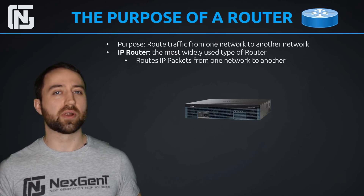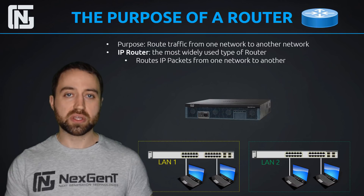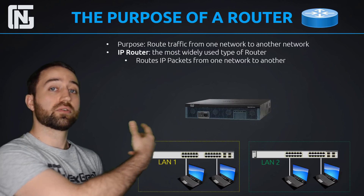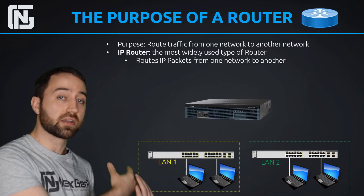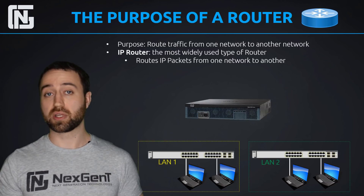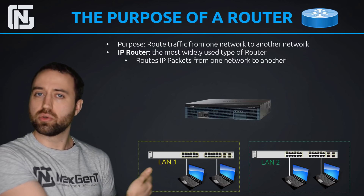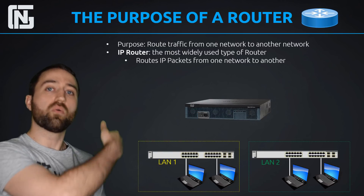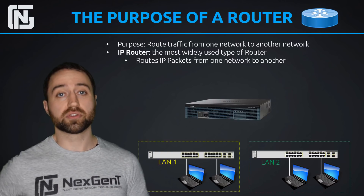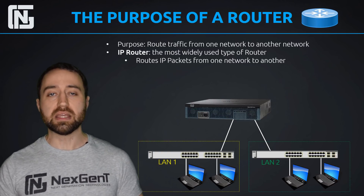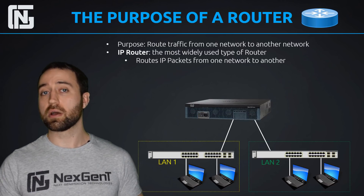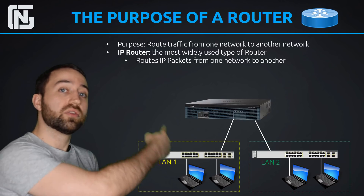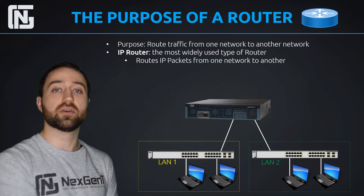Let's define this further with our diagram. We have two physically separated LANs — two different switches connecting LAN 1 and another switch connecting LAN 2. Hosts on LAN 1 can communicate with each other, and hosts on LAN 2 can communicate with each other, but they cannot communicate across. To get traffic from LAN 1 over to LAN 2, we need a router. We connect the switches into our router on different router interfaces, and as long as those interfaces are configured with IP addresses on those networks, it will automatically route traffic between the two LANs.